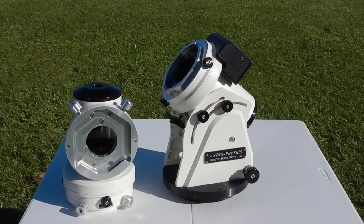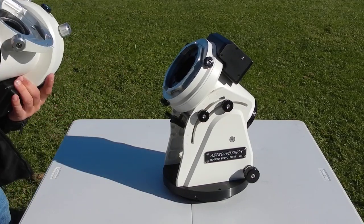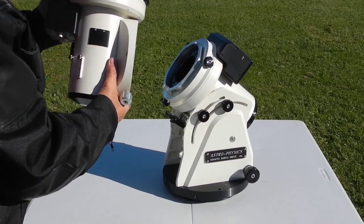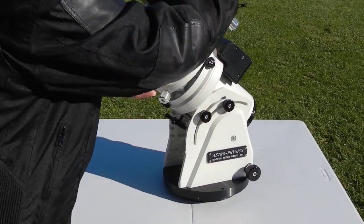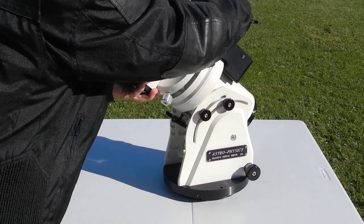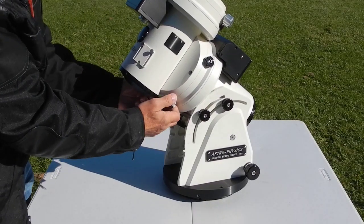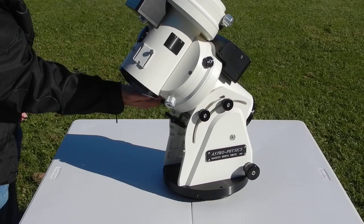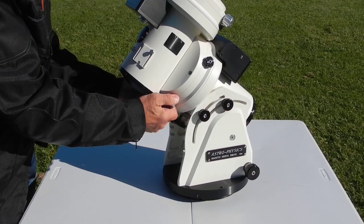This is how simple it is to attach the dec axis to the right ascension housing. There it is.